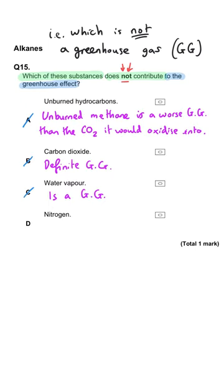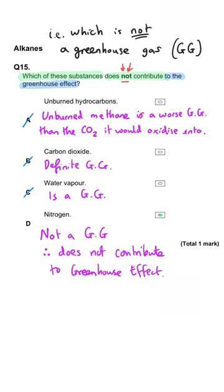And so that means that the answer must be D, nitrogen does not contribute to the greenhouse effect, mostly because its bonds are non-polar compared to carbon dioxide and water vapour in particular. But nitrogen is not a greenhouse gas, and so it does not contribute to the greenhouse effect.